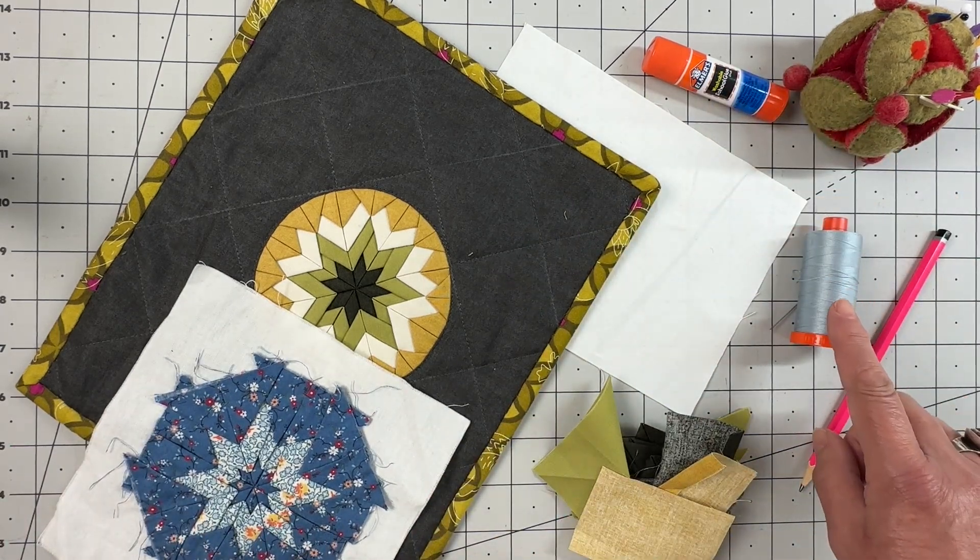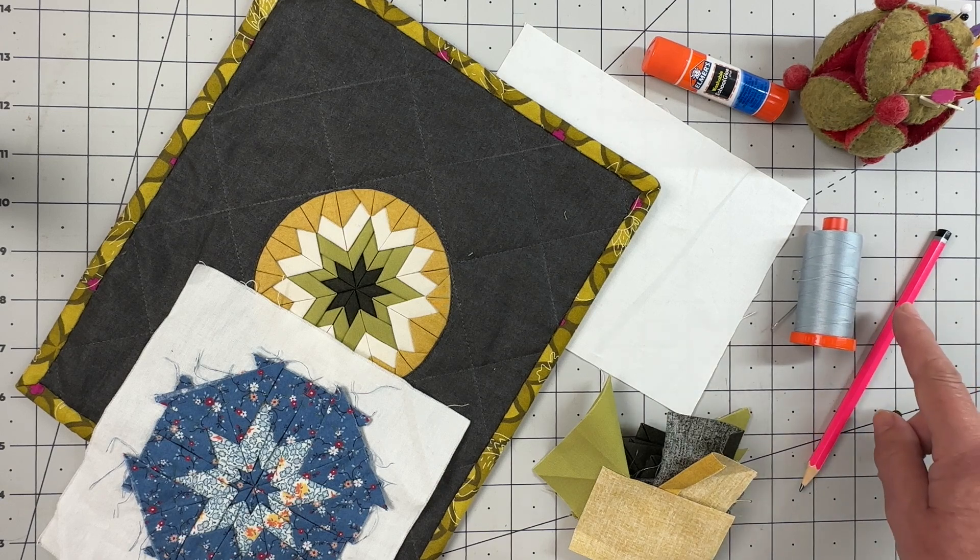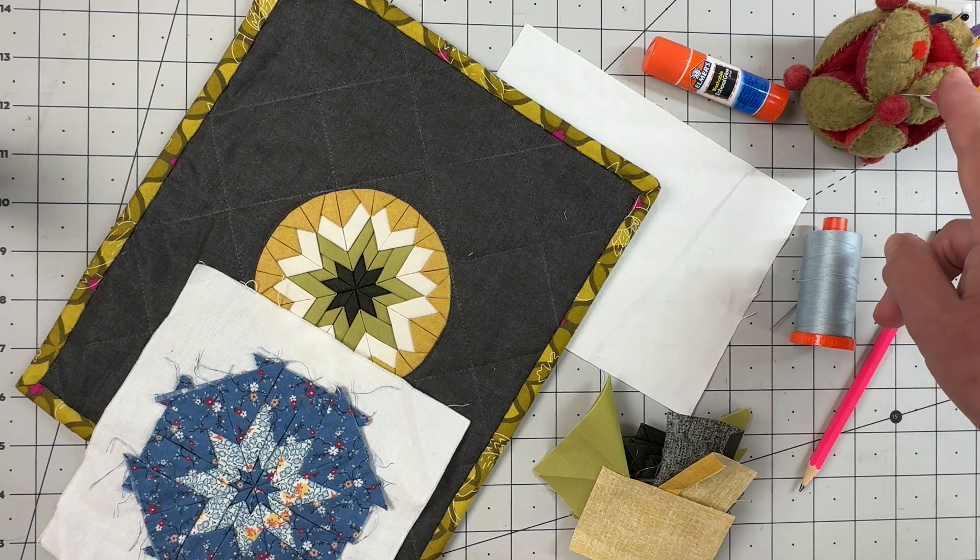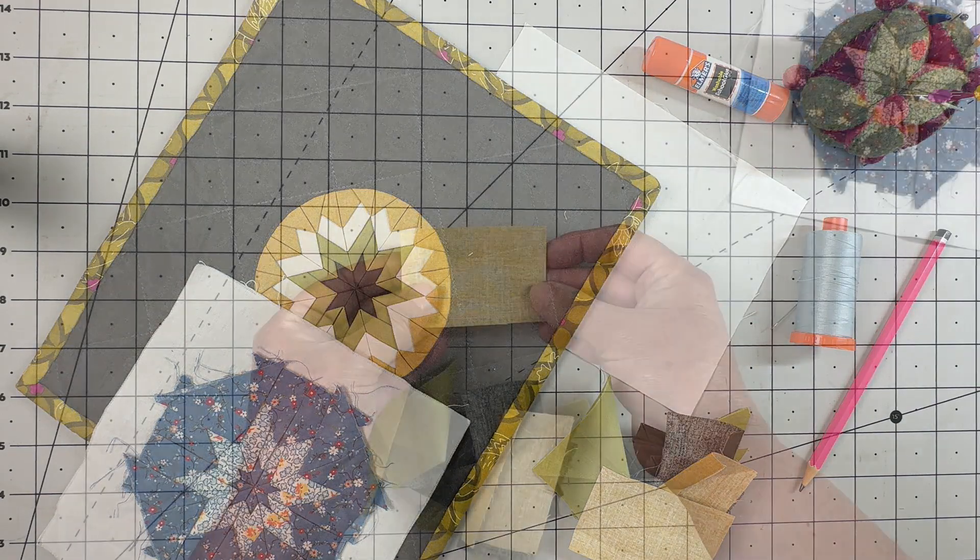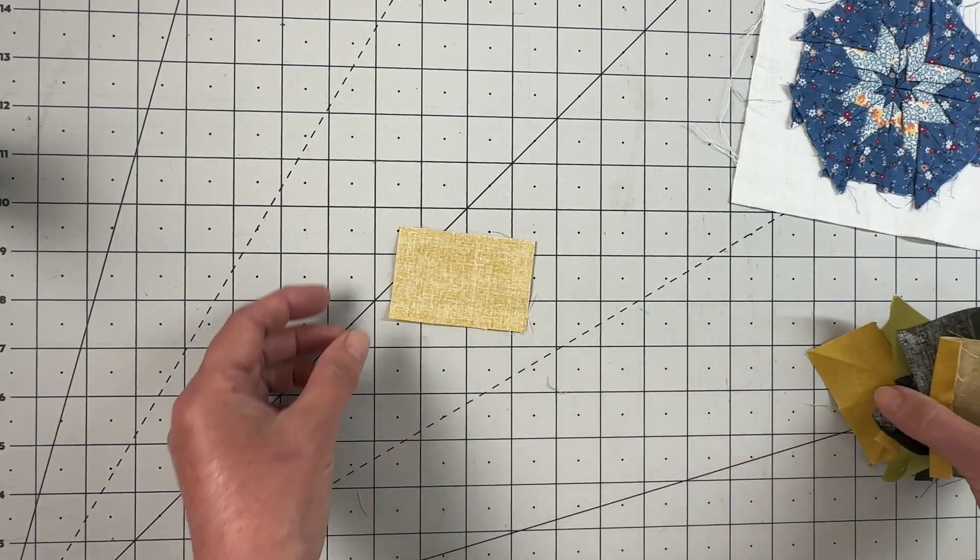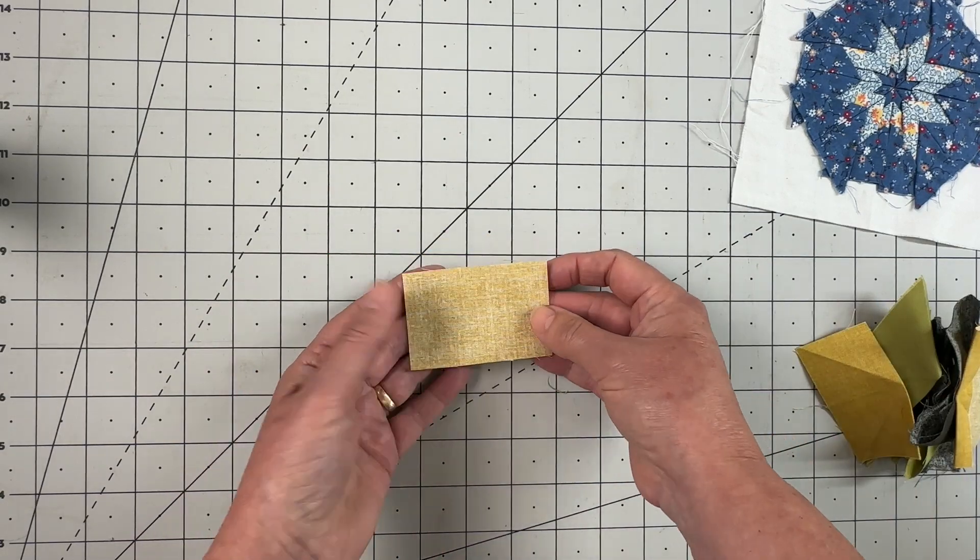You're going to need some thread and a needle, a pencil and ruler, some pins, and also perhaps a little bit of glue will come in handy as well. Cut your fabrics in the numbers that you will need and take this to your ironing board.